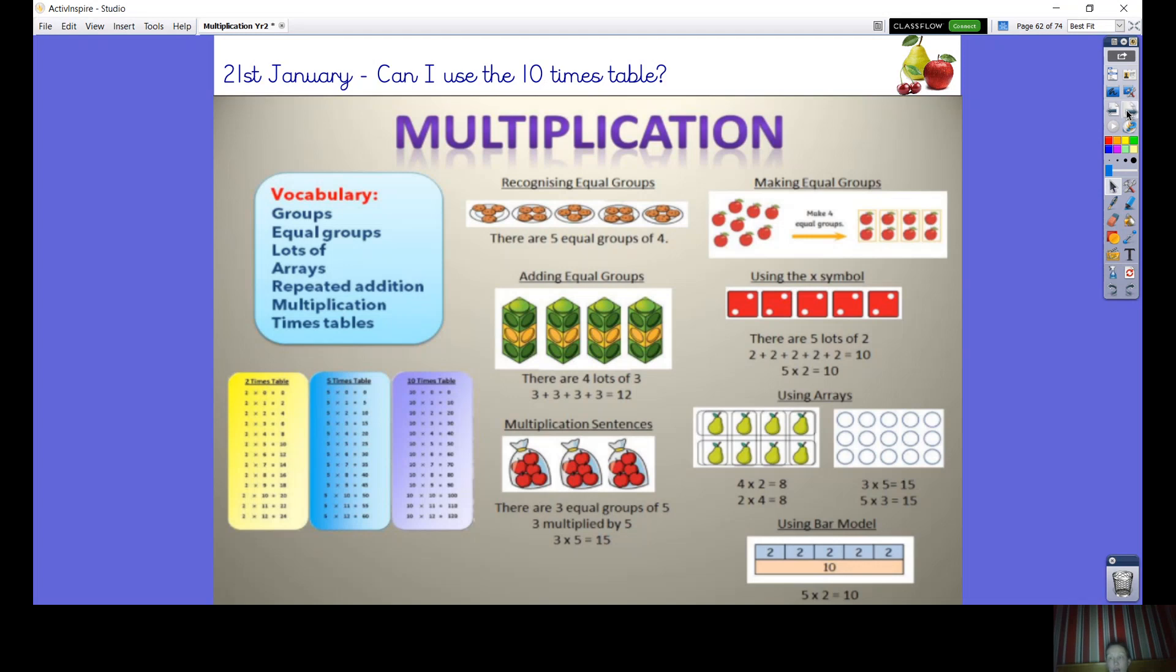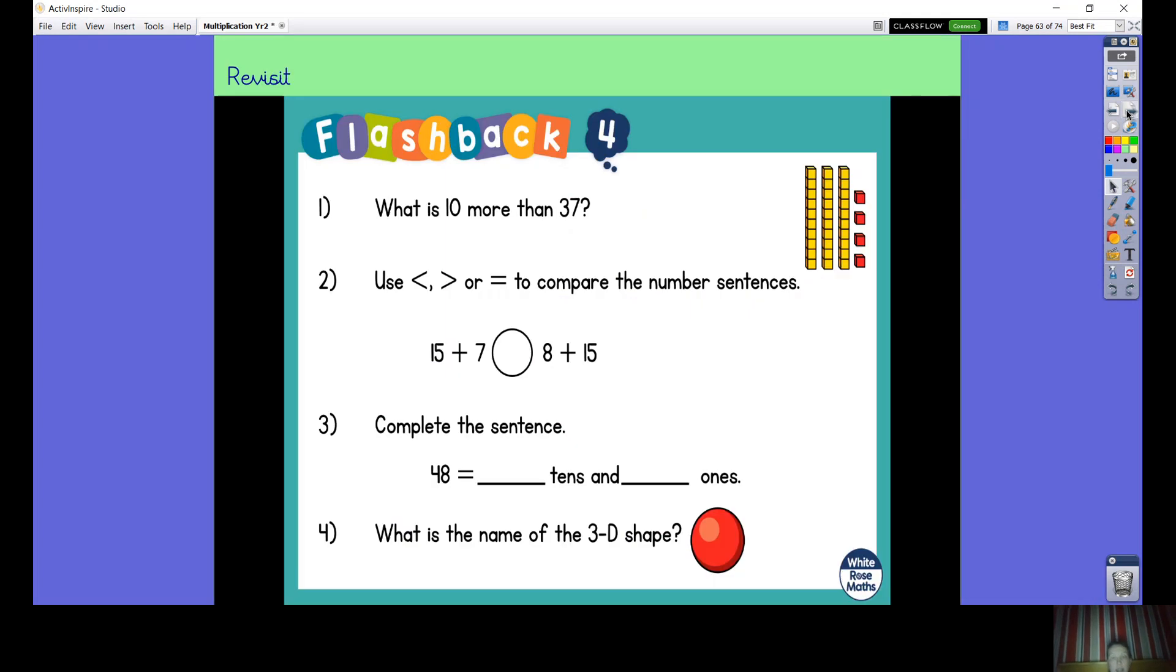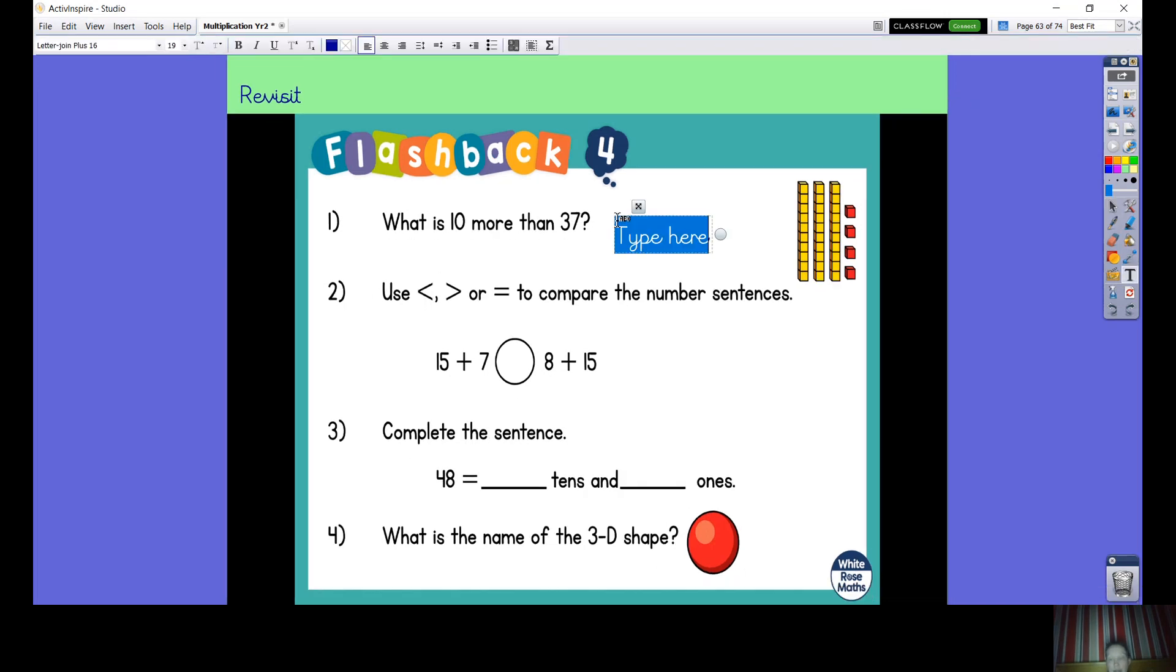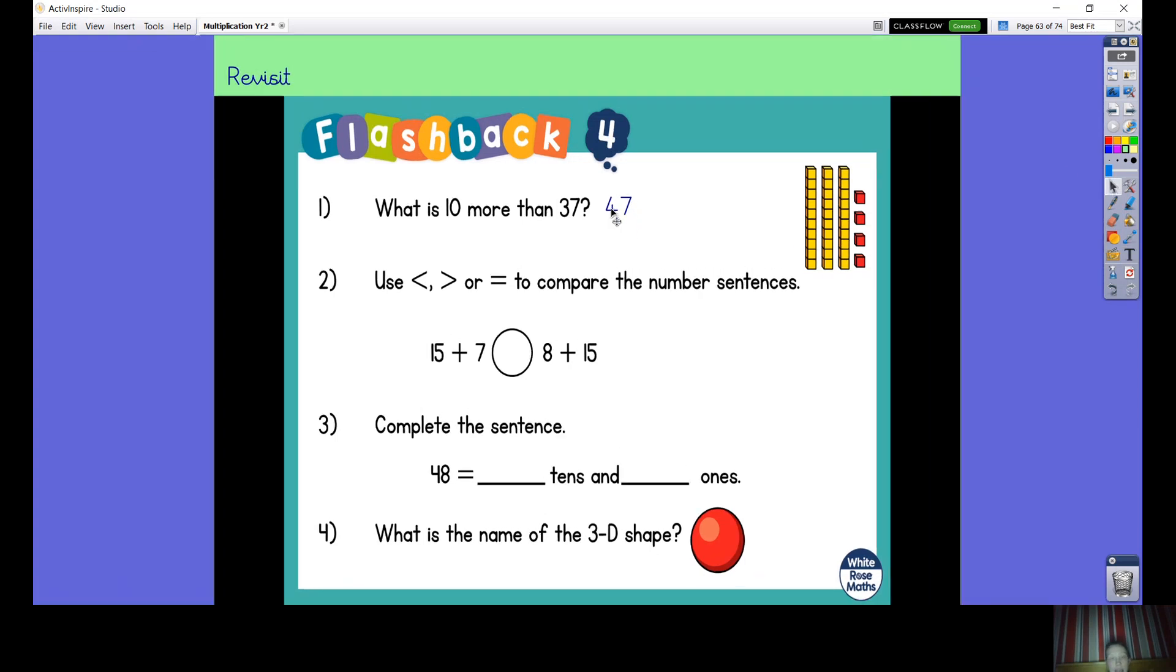Let's warm up our maths brains with a few questions. Have a go at these and then we'll go through the answer. Brilliant. So 10 more than 37, we're adding an extra 10 on, so we're going to add a 10 onto this number, so that will make us have 47.